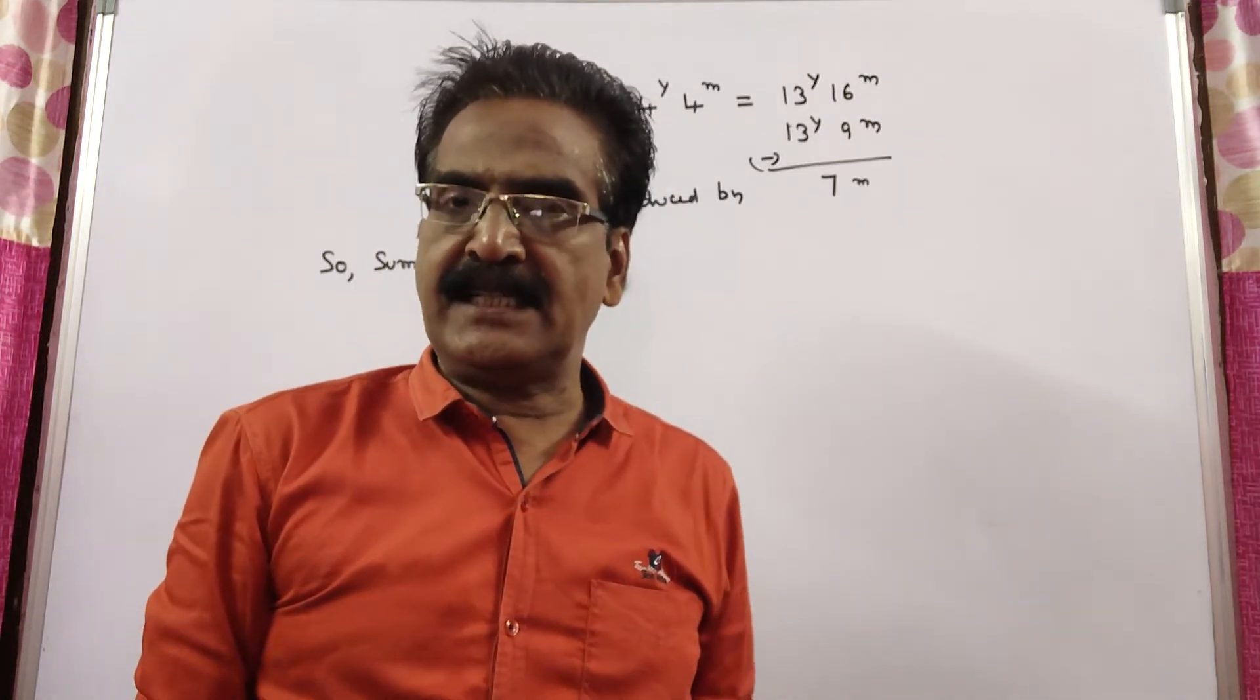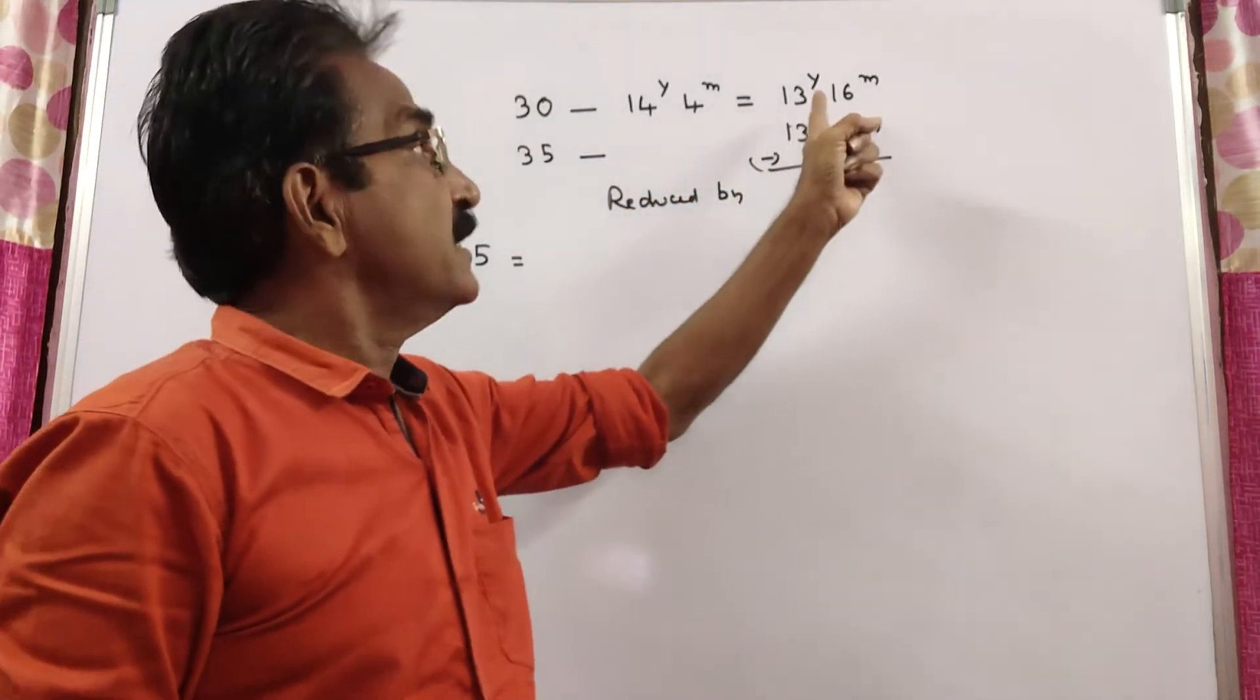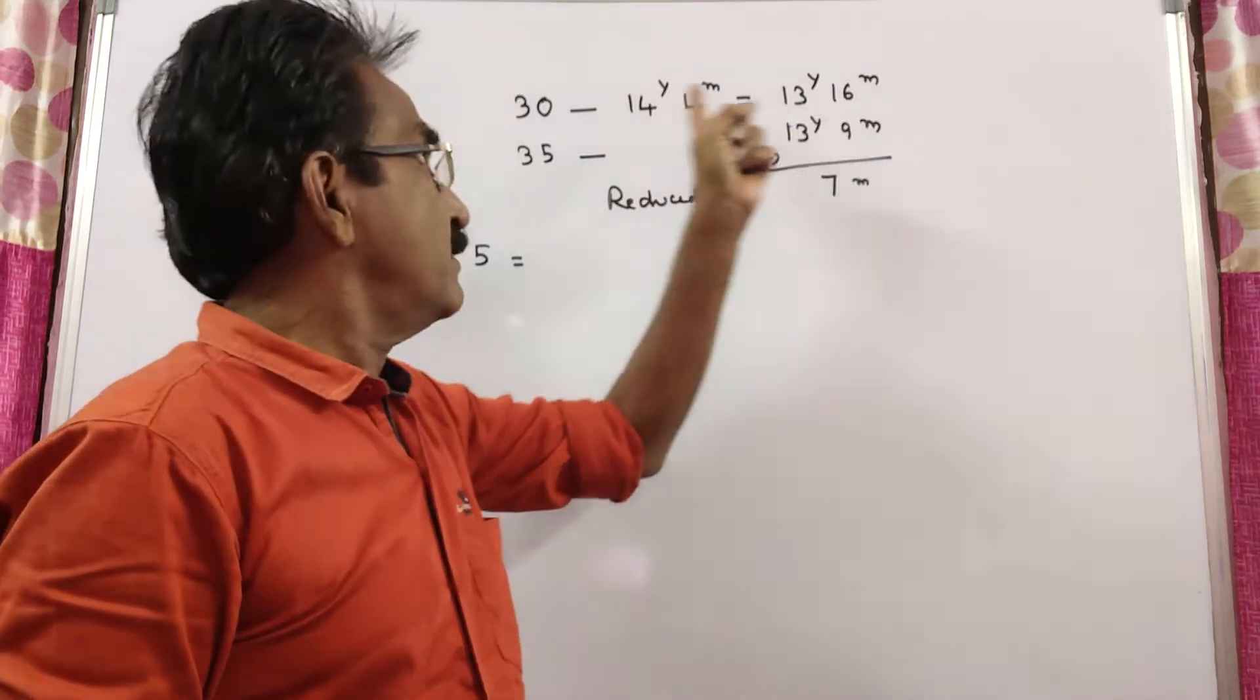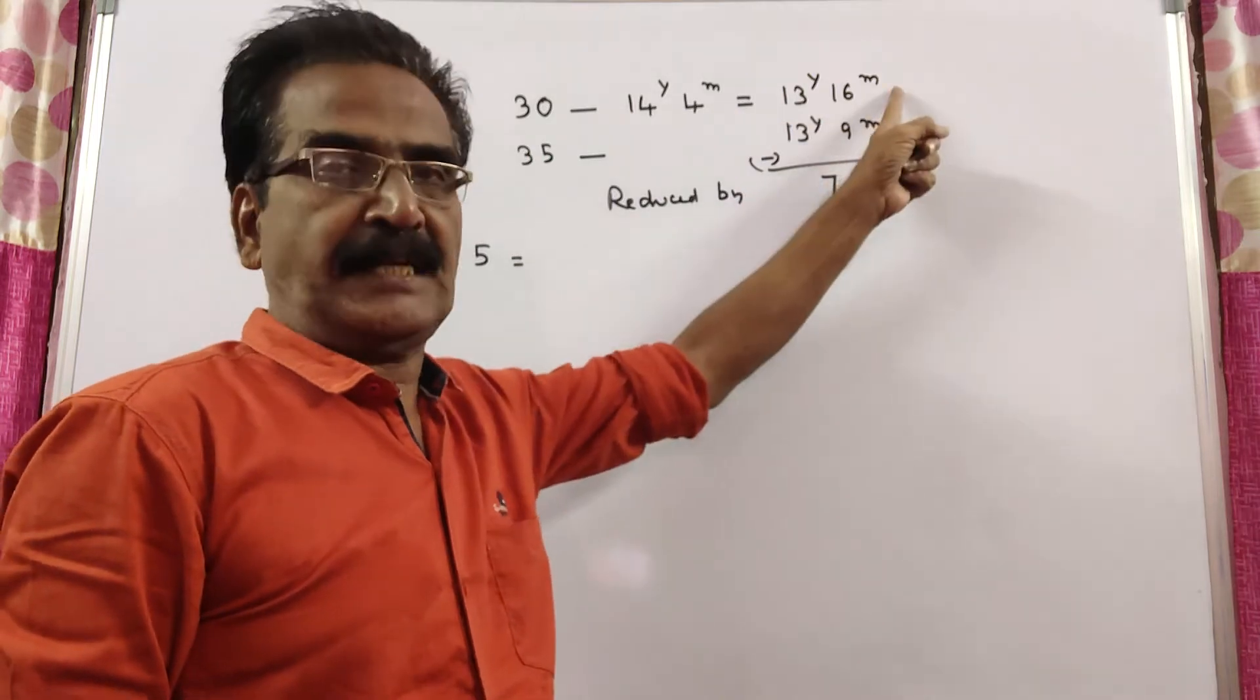The average age of 30 students of a class is 14 years, 4 months. That is 13 years, 16 months. 14 years means 13 plus 1. 1 year means 12 months, 12 plus 4, 16 months.